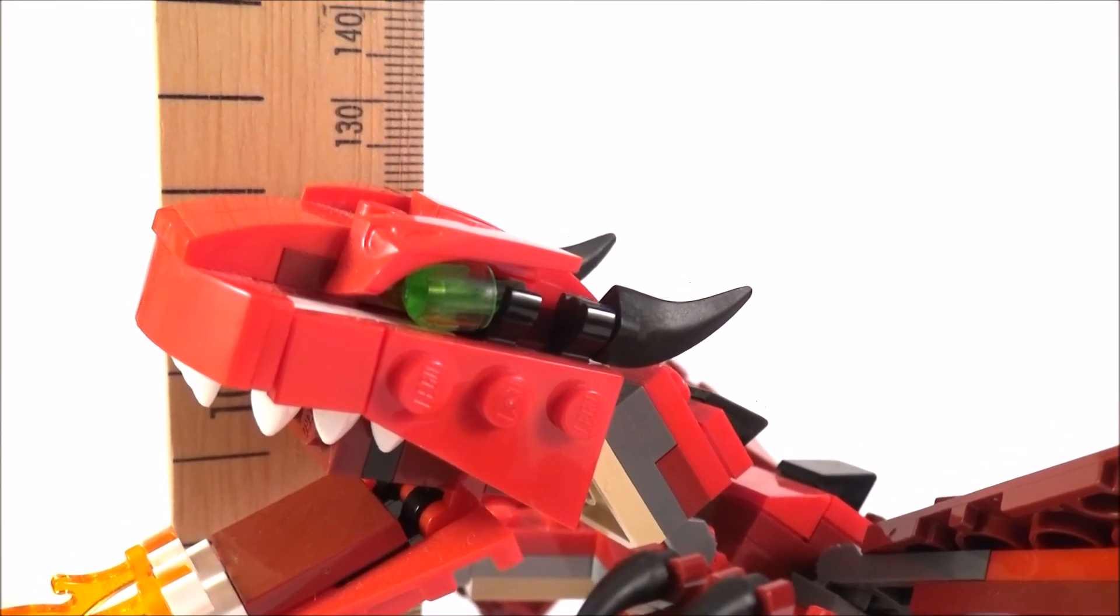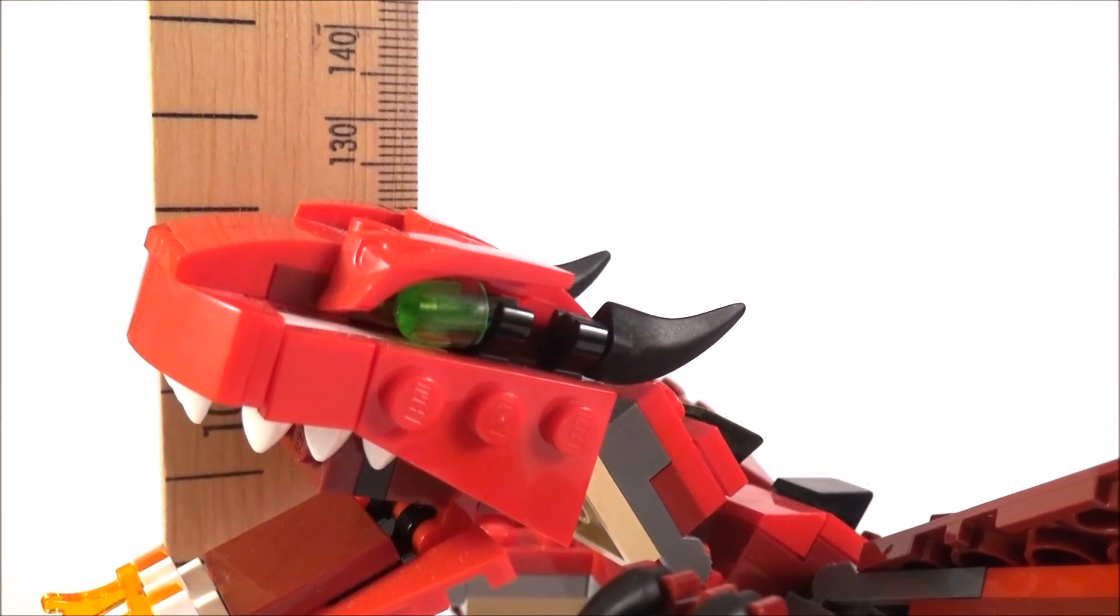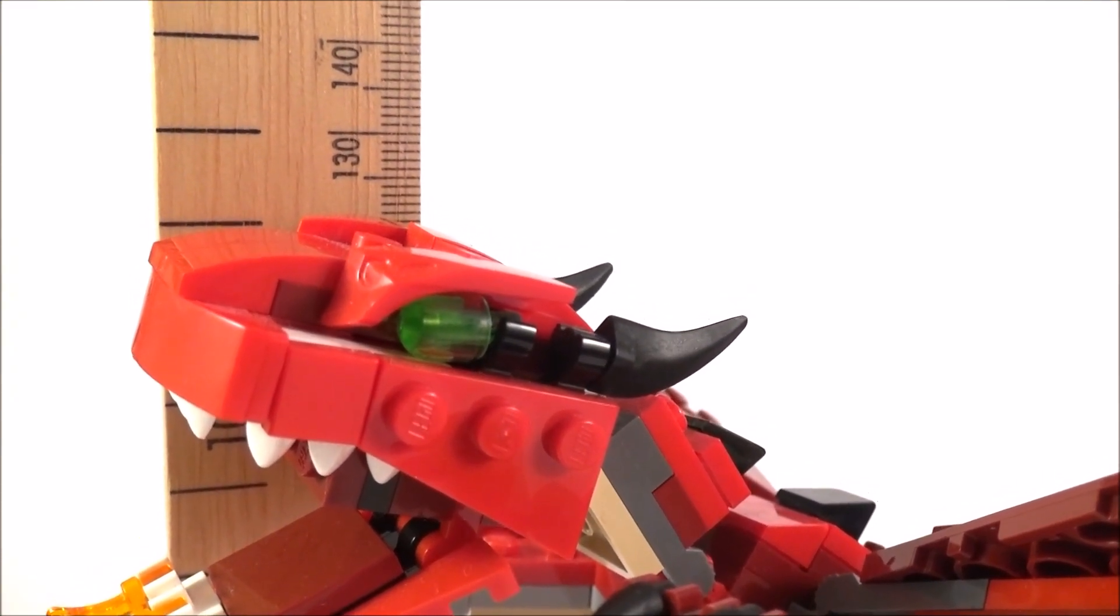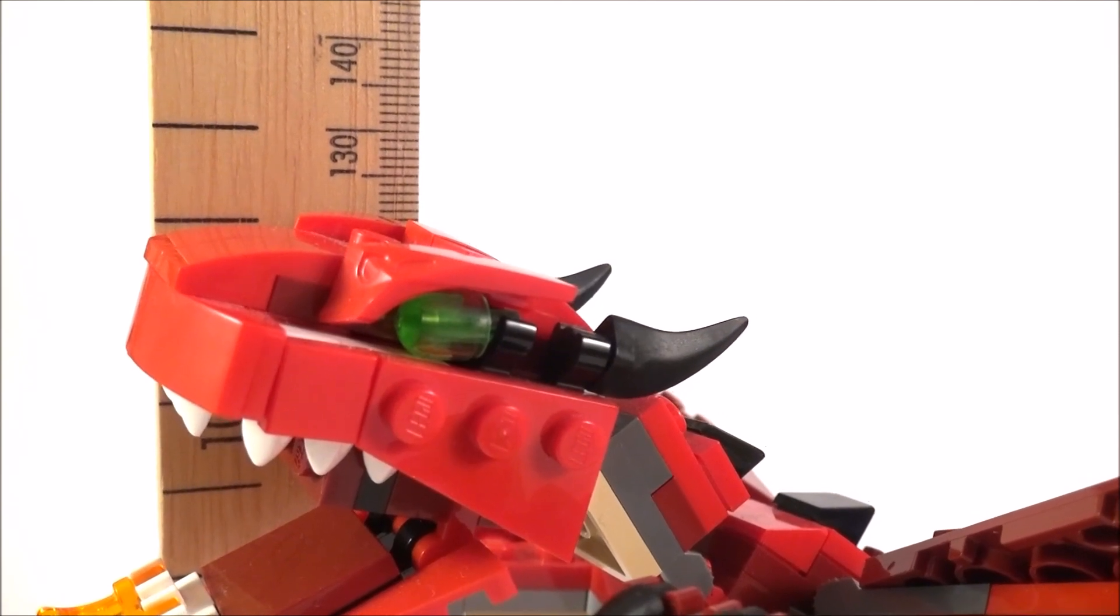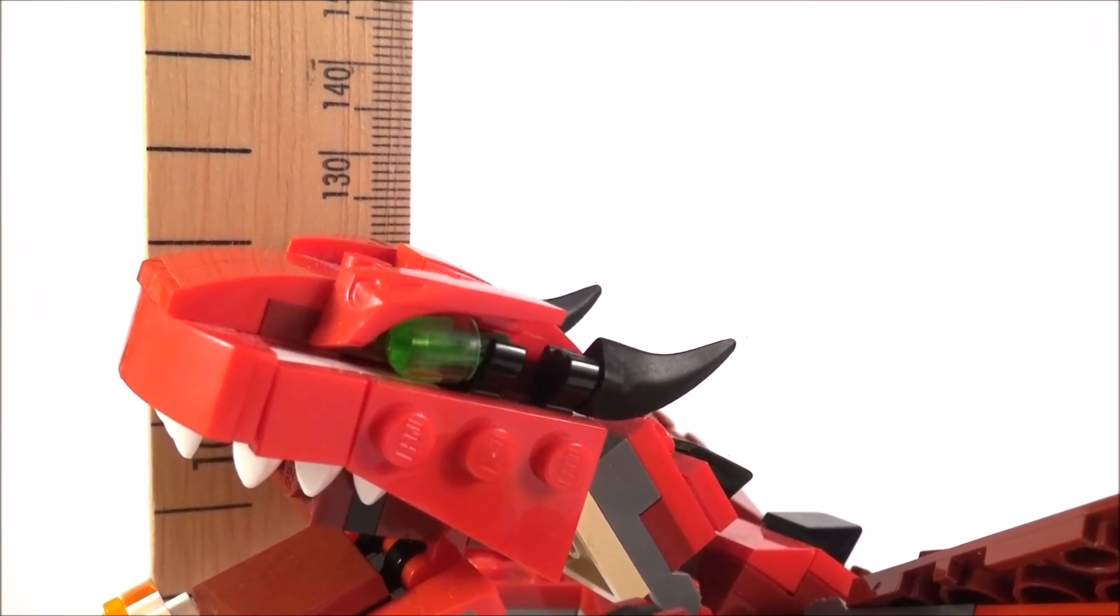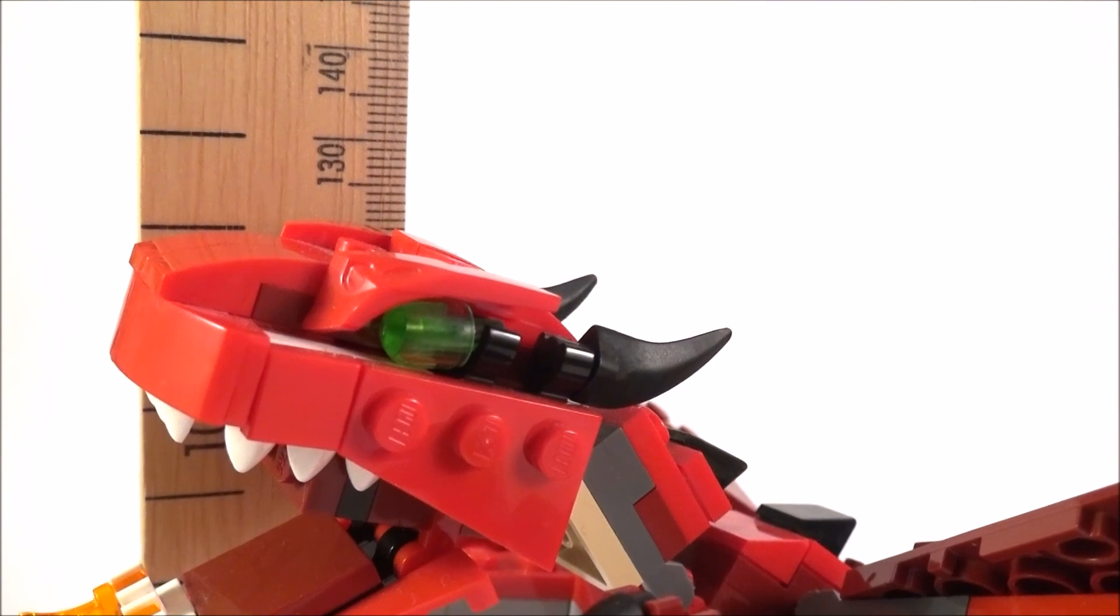So to reduce any error, what I'm doing is I have my eye in line with the thing that I'm actually recording, as well as making sure the ruler is as close to it as possible, and this gives me my most accurate reading without any parallax error.